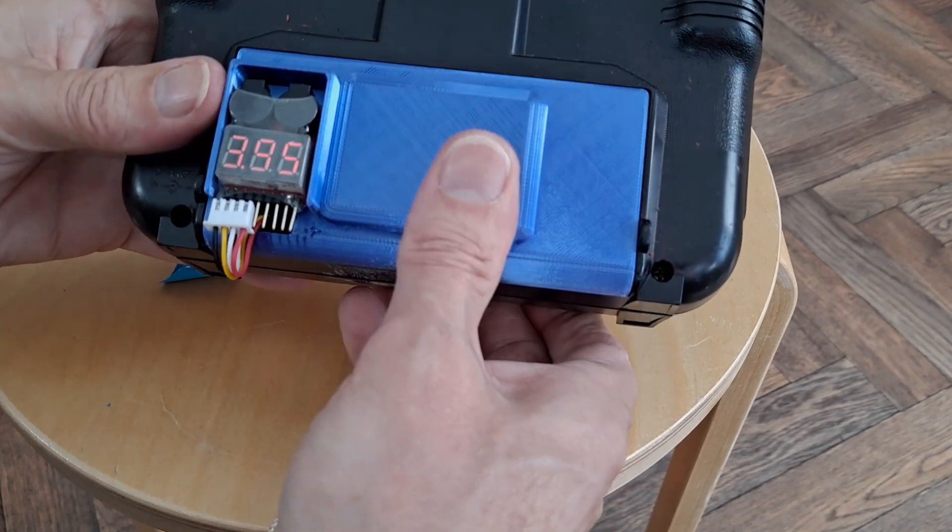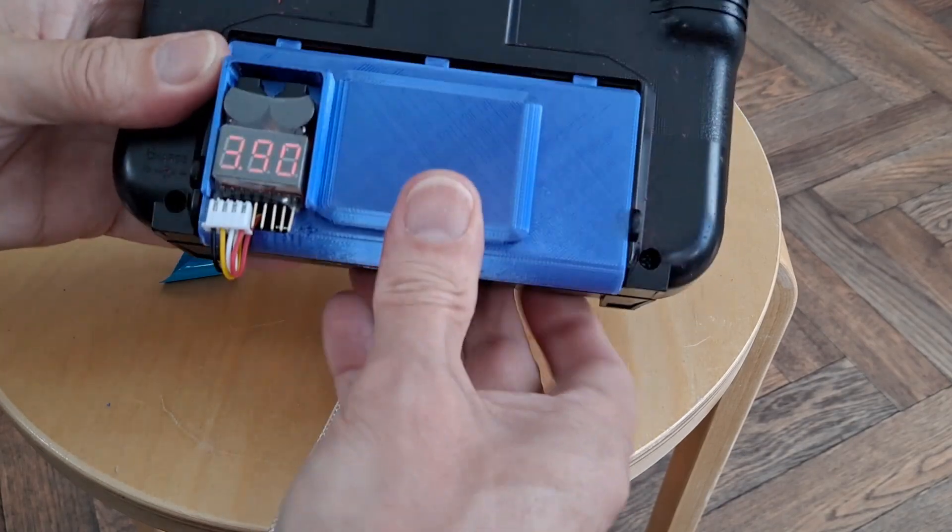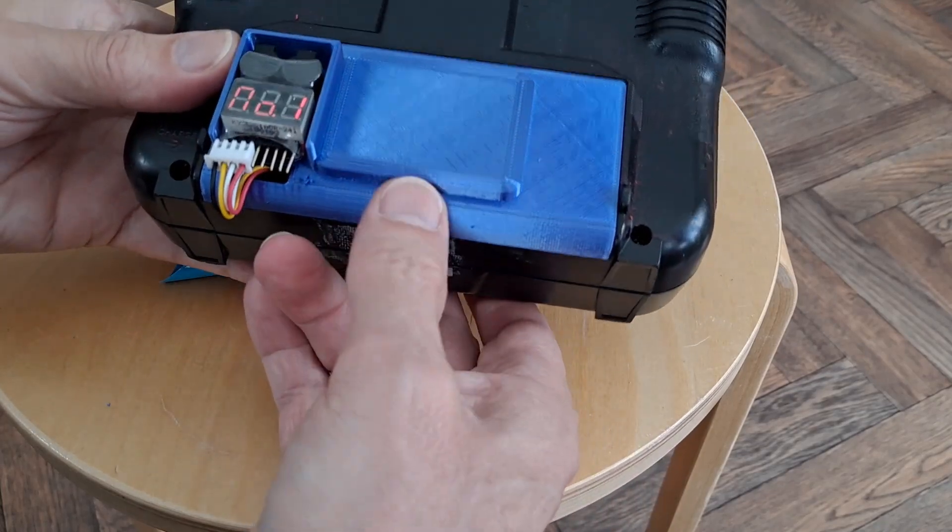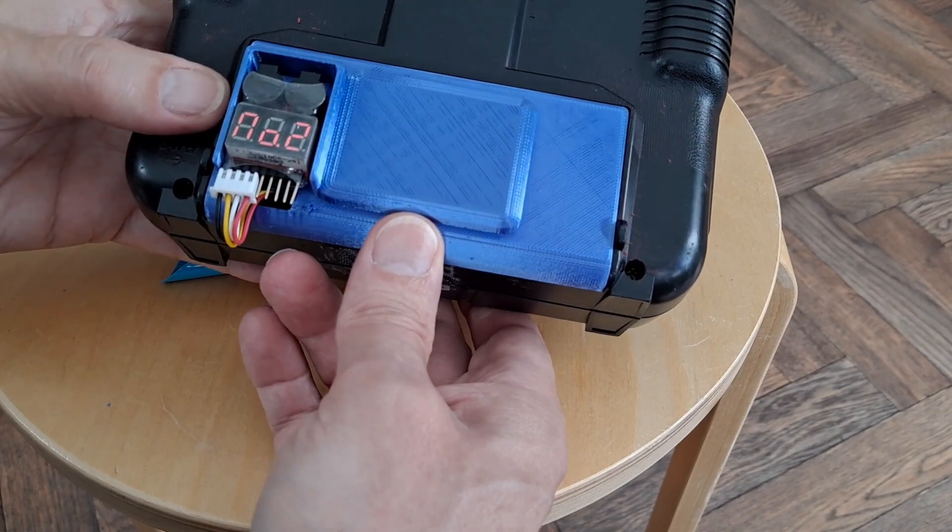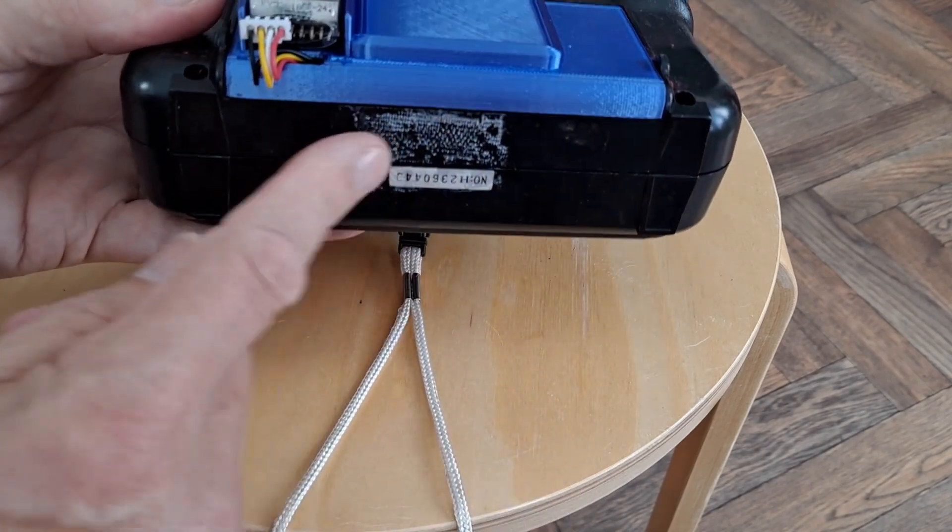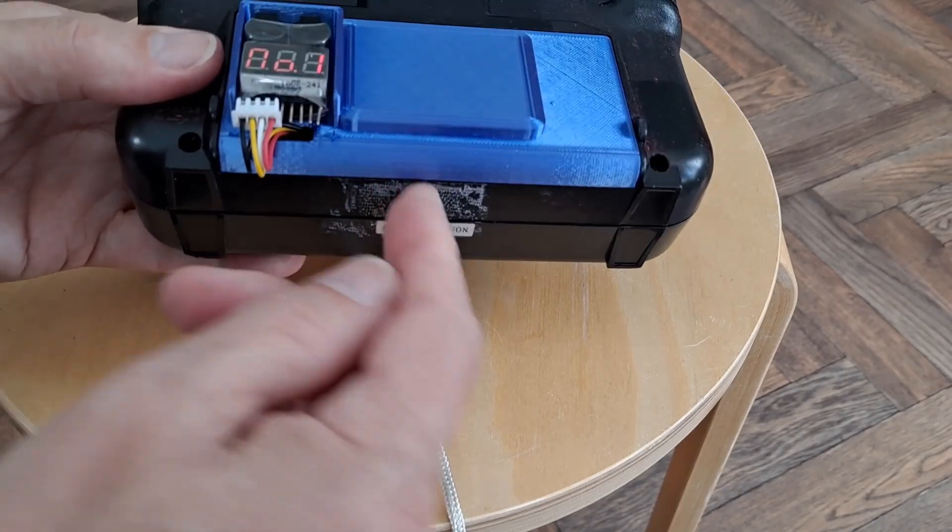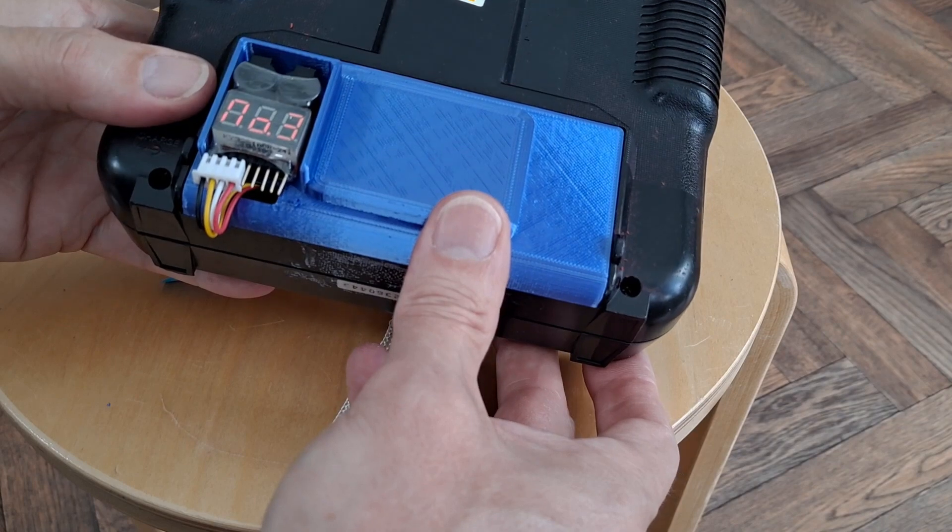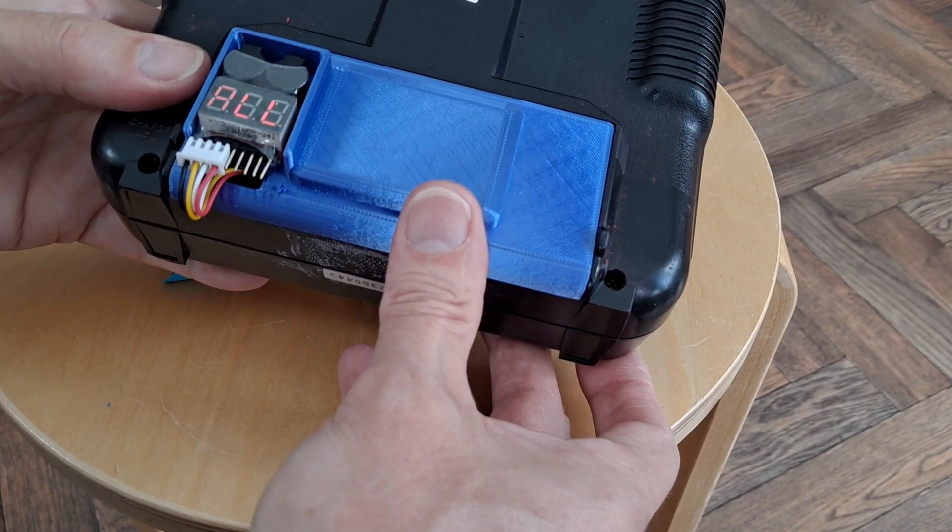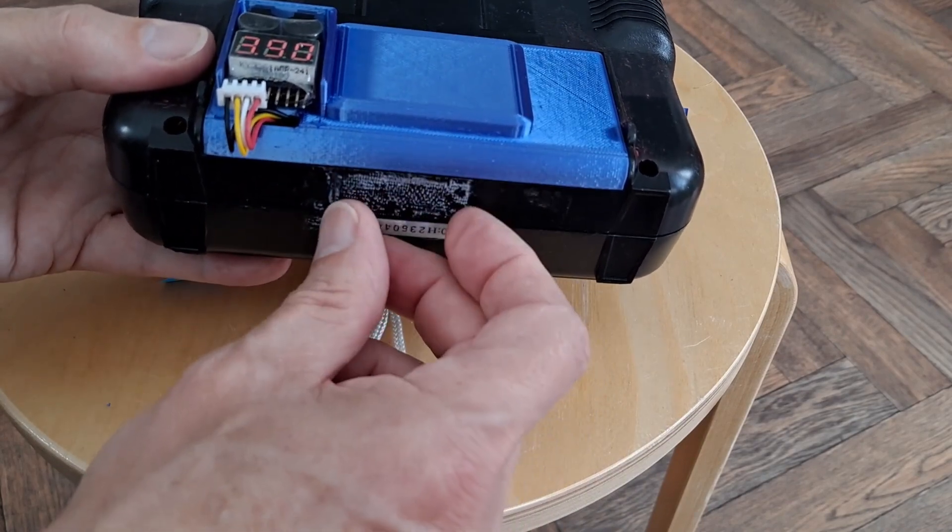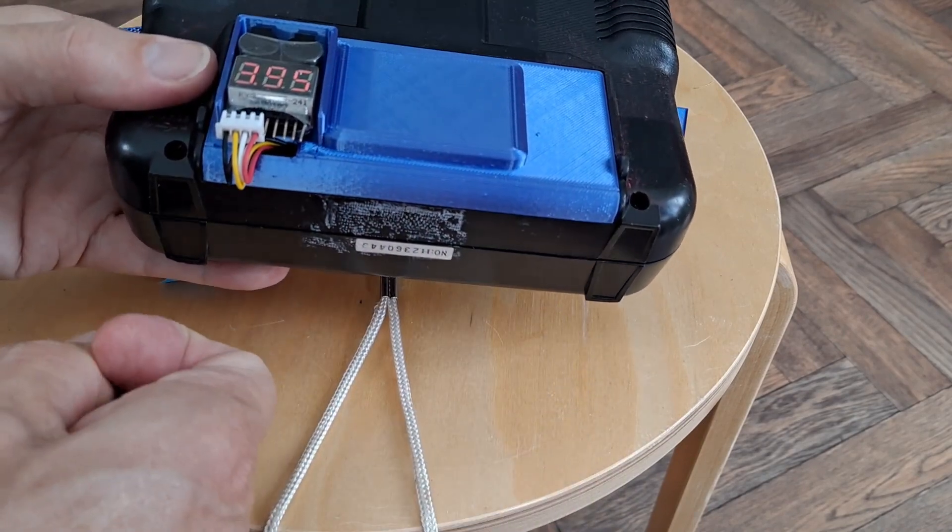This does look like it's going to slip out though, which was a problem with it before. So I might still end up putting a bit of sticky tape. I haven't cleaned that off so that's still sticky. I might still put a bit of tape around it just to stop it sliding off. Or I could modify this to have a little bit that comes down the front there and put a screw in it.